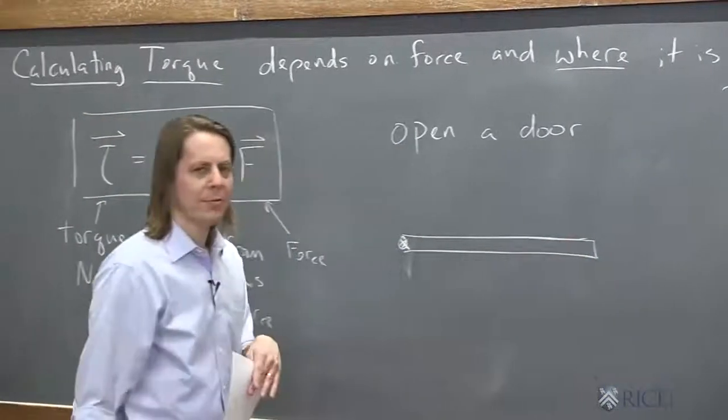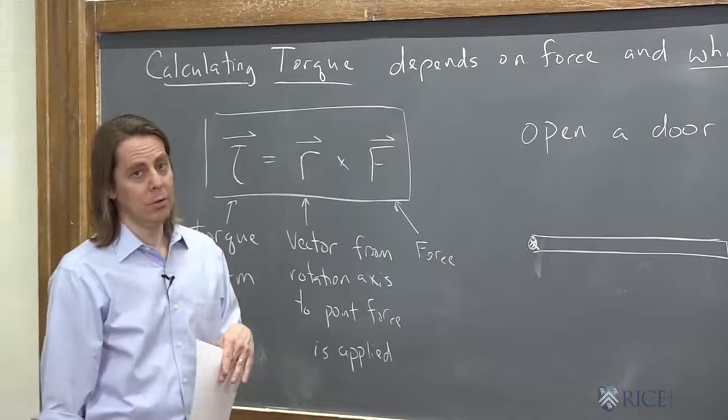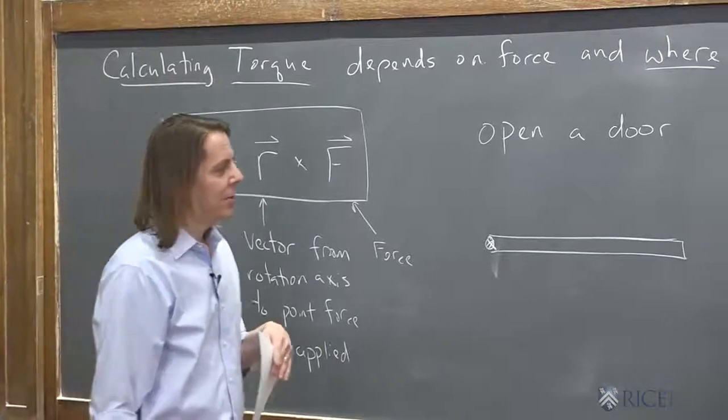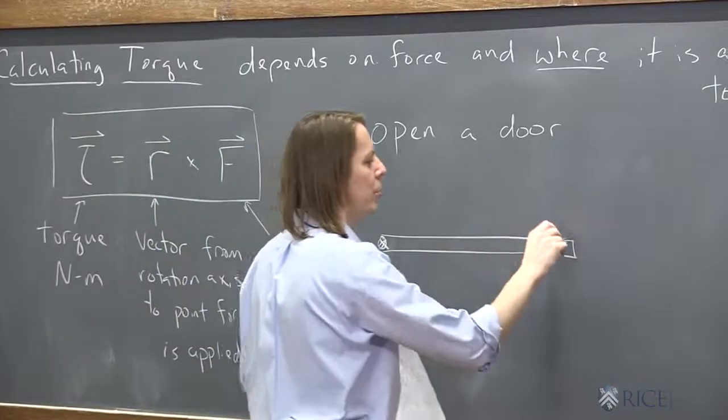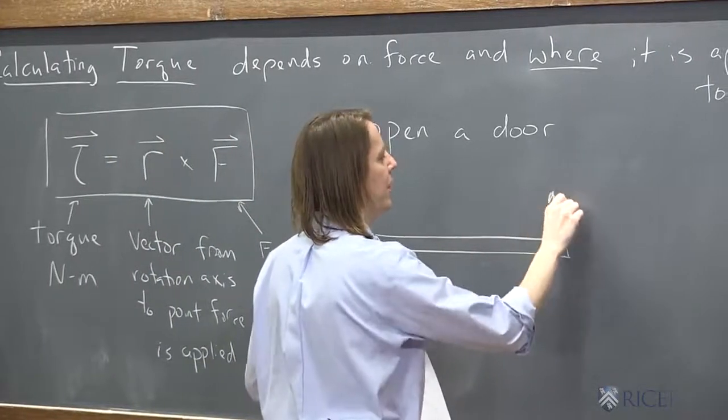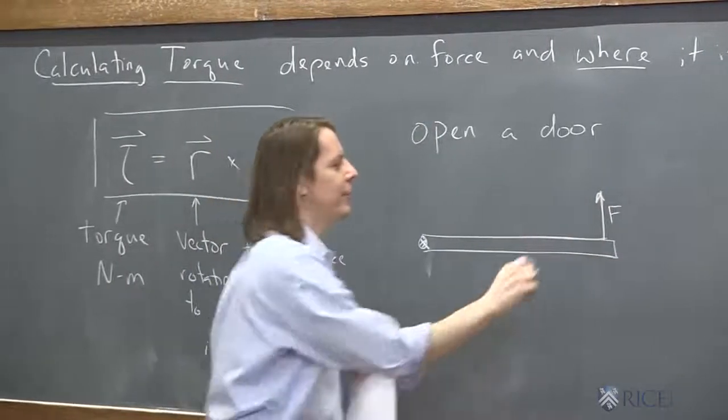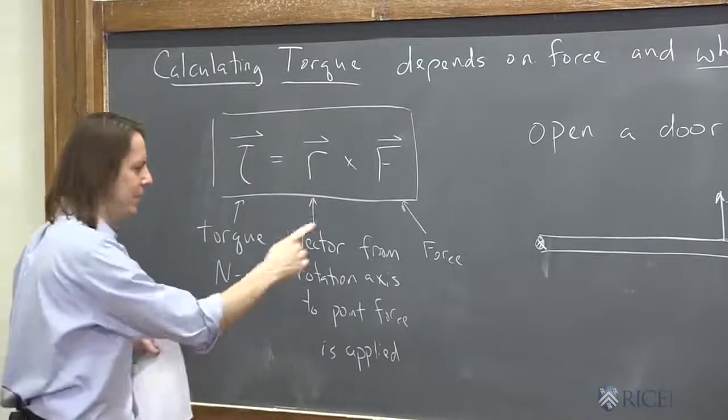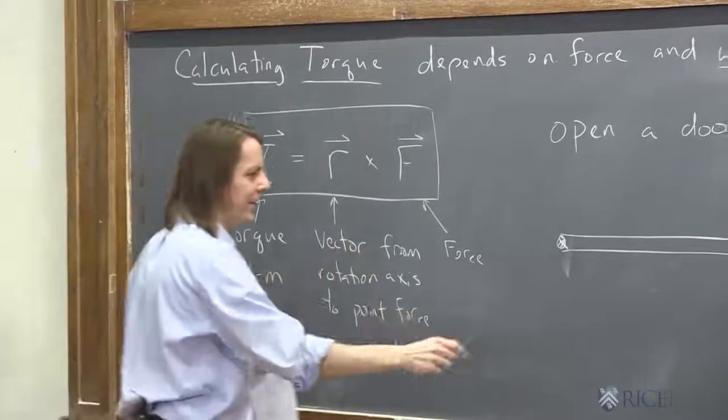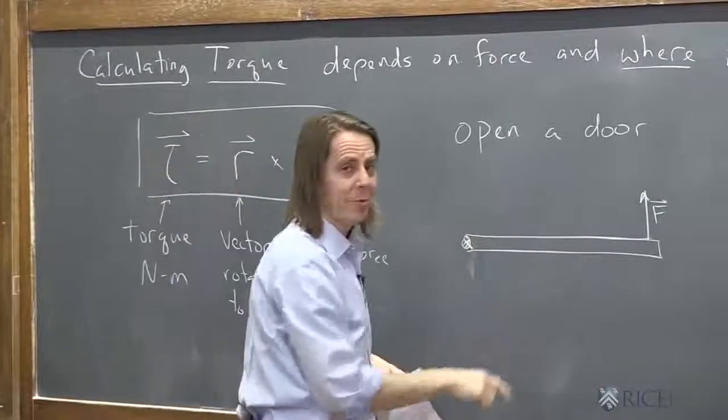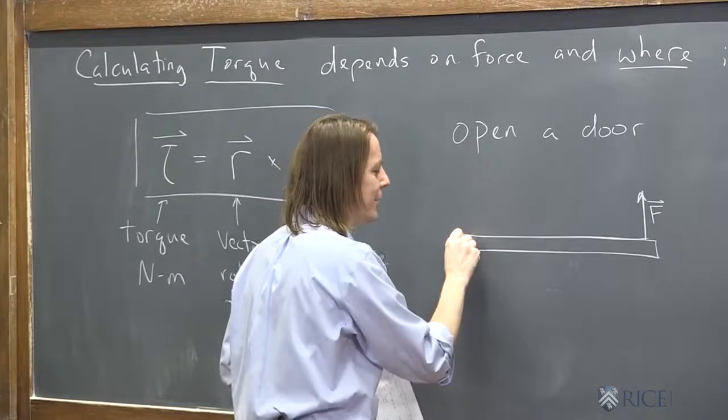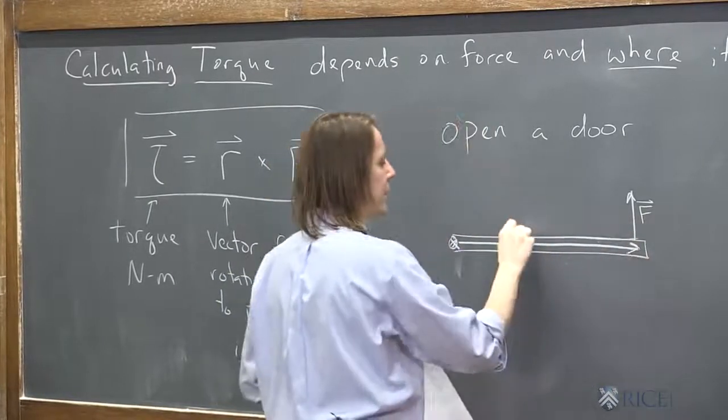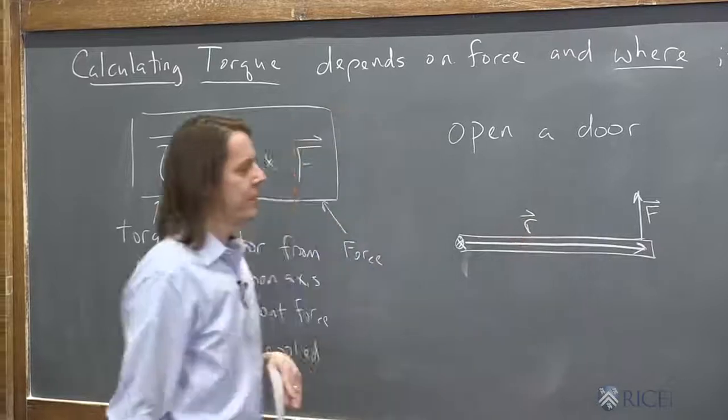So it rotates on this end. And now the handle for a door, is it ever on the side where the hinge is? No, it's on the other side, because that makes it easier to apply a big torque. So what we're going to do is pull the door open. We're going to apply our force like that. So there's our force vector. And now where is the R vector? Well, let's read. It's the vector from the rotation axis to the point the force is applied. We'll assume the door is thin. We won't worry about the fact that we're pulling from one edge of the door. We'll just draw it like that. So there's R right there.